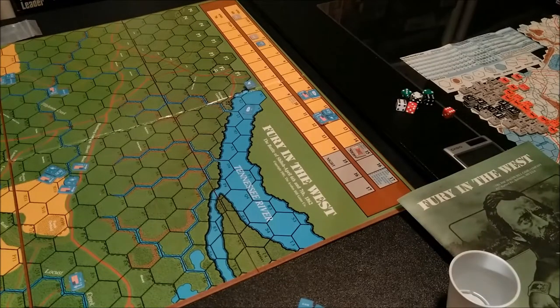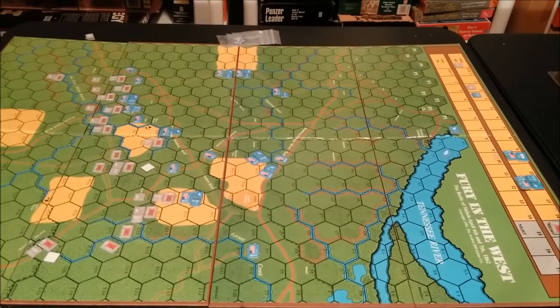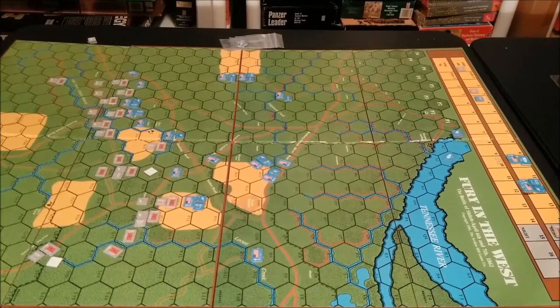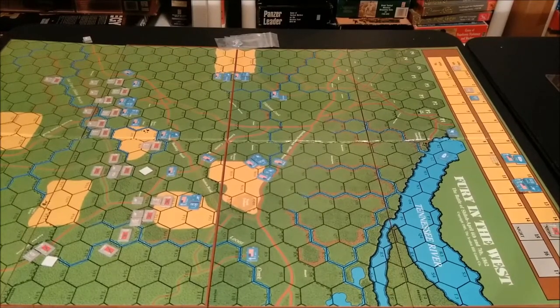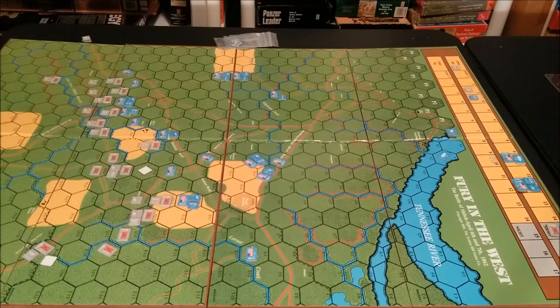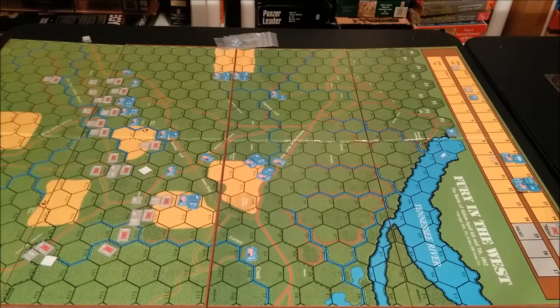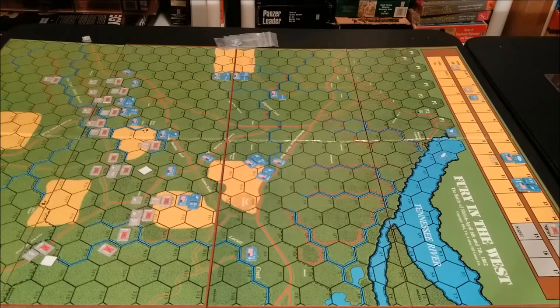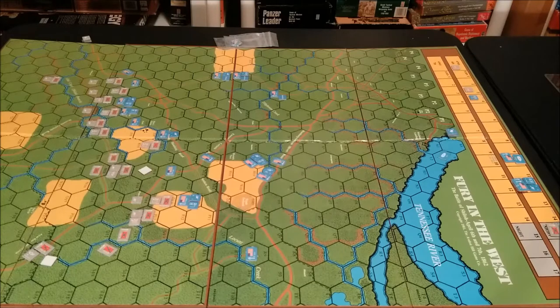I think that's pretty much the components, an overview of the components. The game is mostly an I go, you go. The Confederate player goes first, then has combat. Then the Union player goes first and has combat. And then there's some basic upkeep to do. And then we proceed to the next turn. I will show an example of movement and an example of combat.